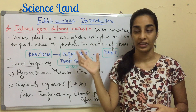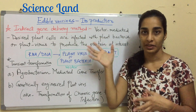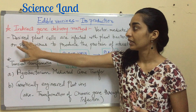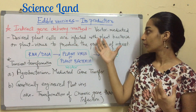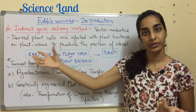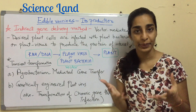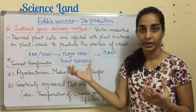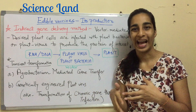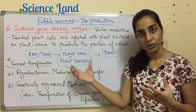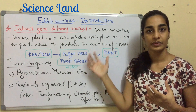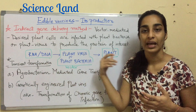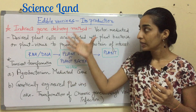Now we will study the indirect gene delivery method. It is a vector-mediated or vector-dependent method. The desired plant cells are infected with either a plant bacteria or a plant virus to produce the protein of interest. The antigenic sequence is first incorporated into the plant virus or plant bacteria, which acts as a vector, and that vector is then used to infect plants.